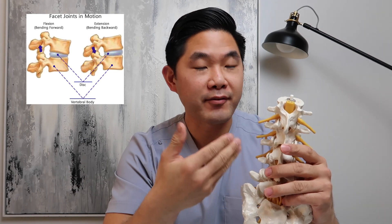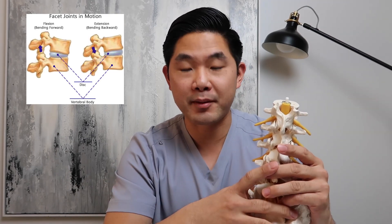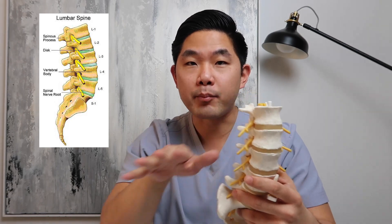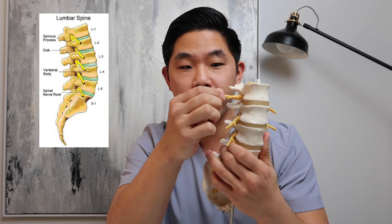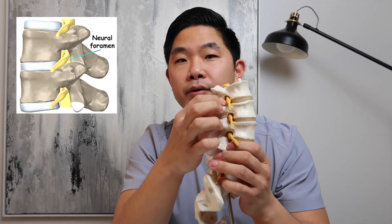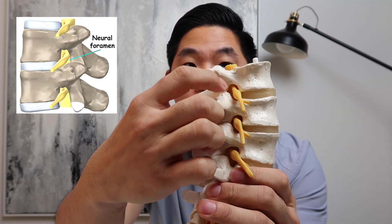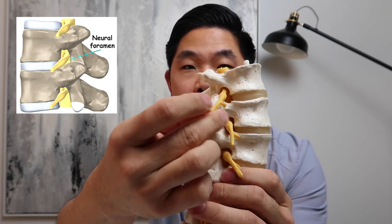When patients have arthritis in these facet joints, that can also cause back pain. The whole point of the spine is to protect our central nervous system, which includes our spinal cord and the nerves that run out below the spinal cord. The nerves run down here and branch out through the sides — these are our nerve roots and they run through our neural foramen. You can see this hole here where the nerves run out — that's our neural foramen. These nerves run to our legs, powering our muscles and providing sensation.